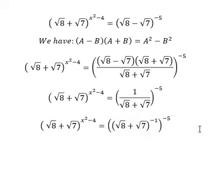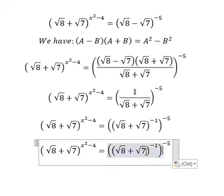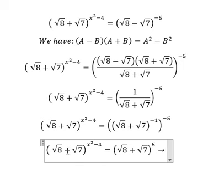Negative one multiplied by negative five gives us positive five. We can see that the bases are now the same, so this one equals this one.